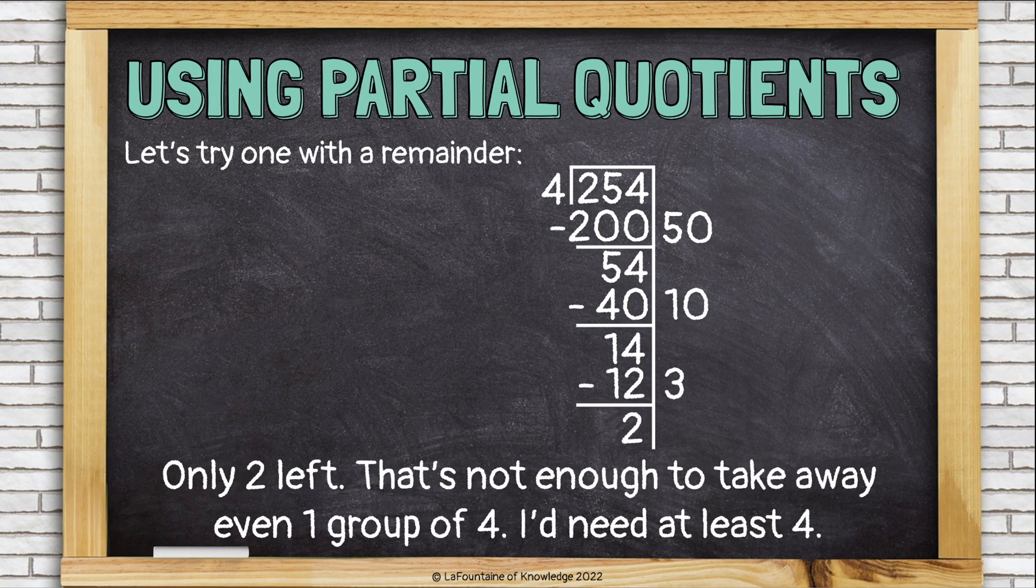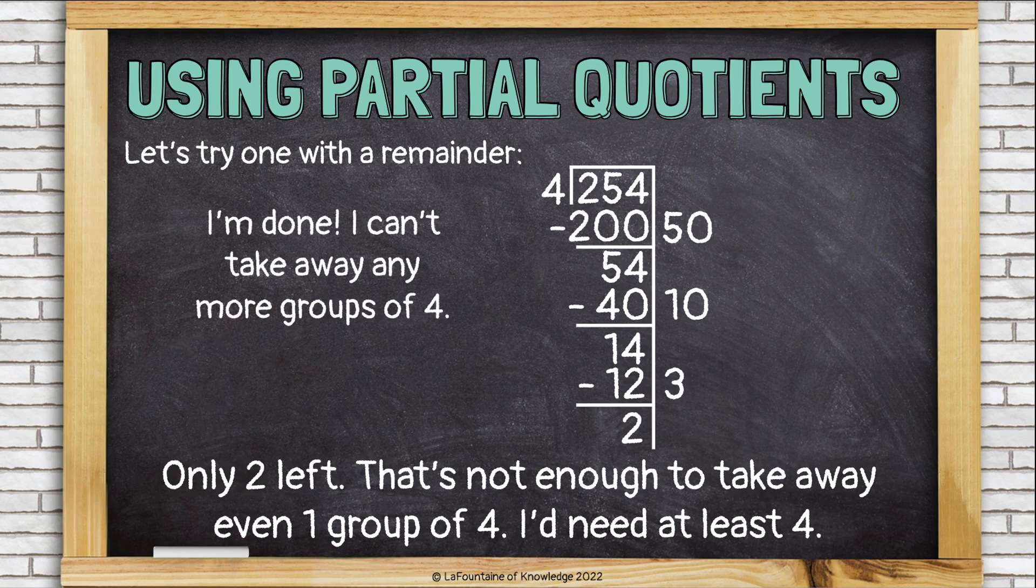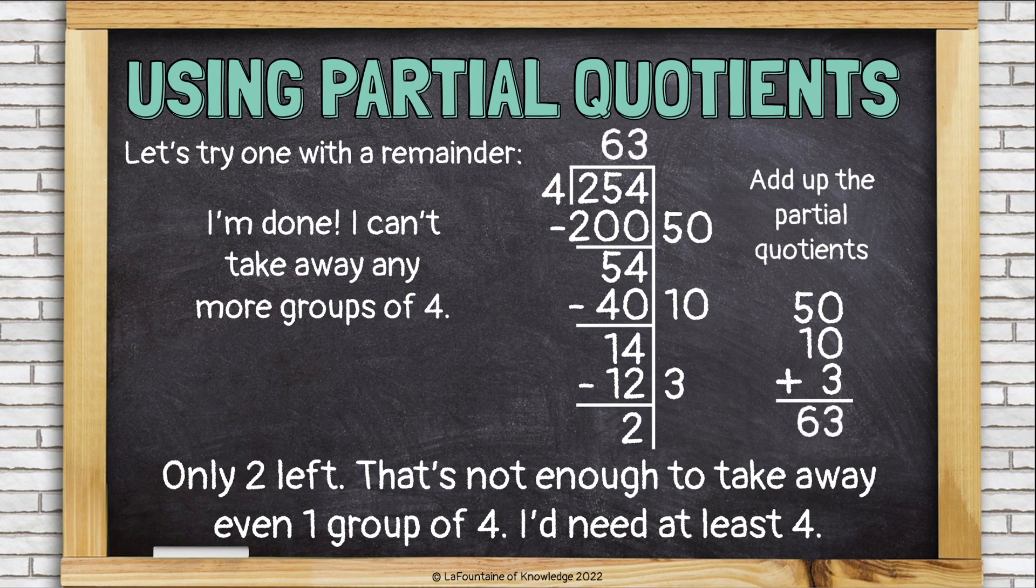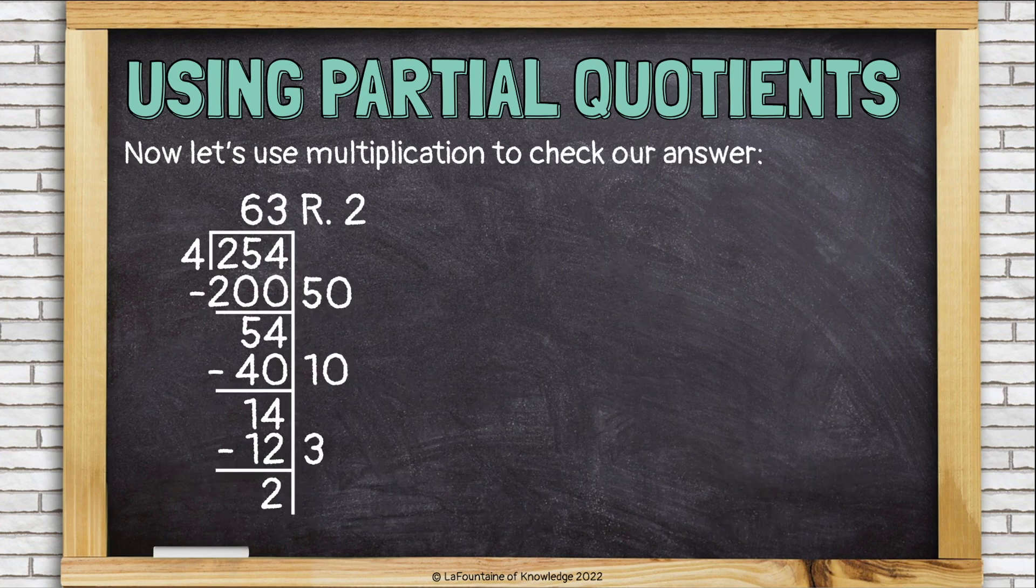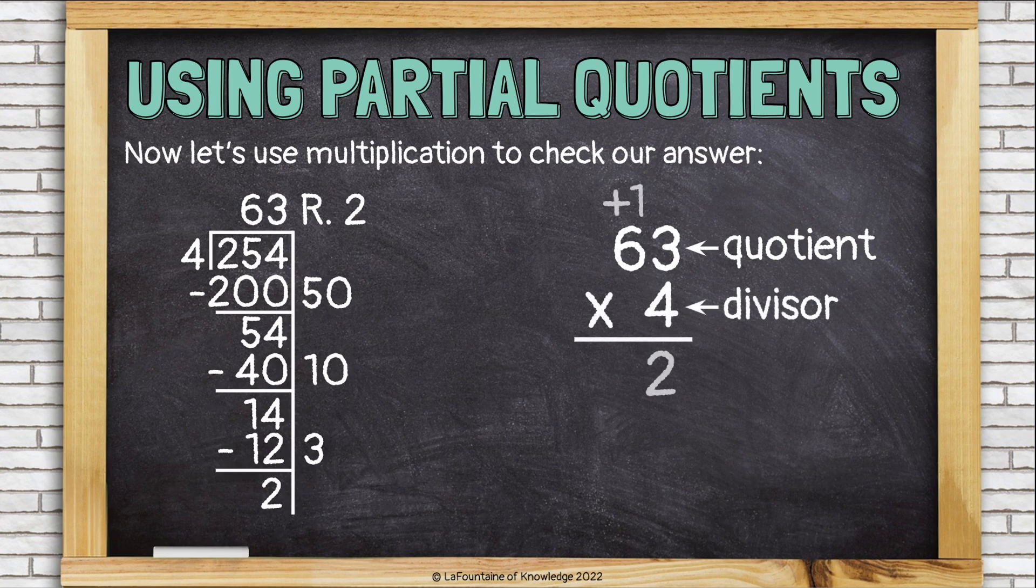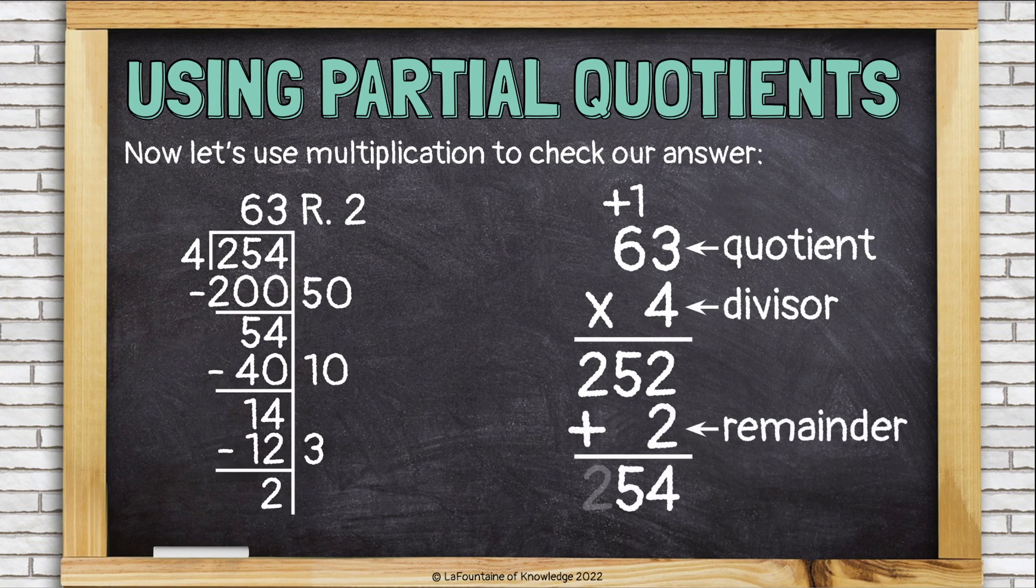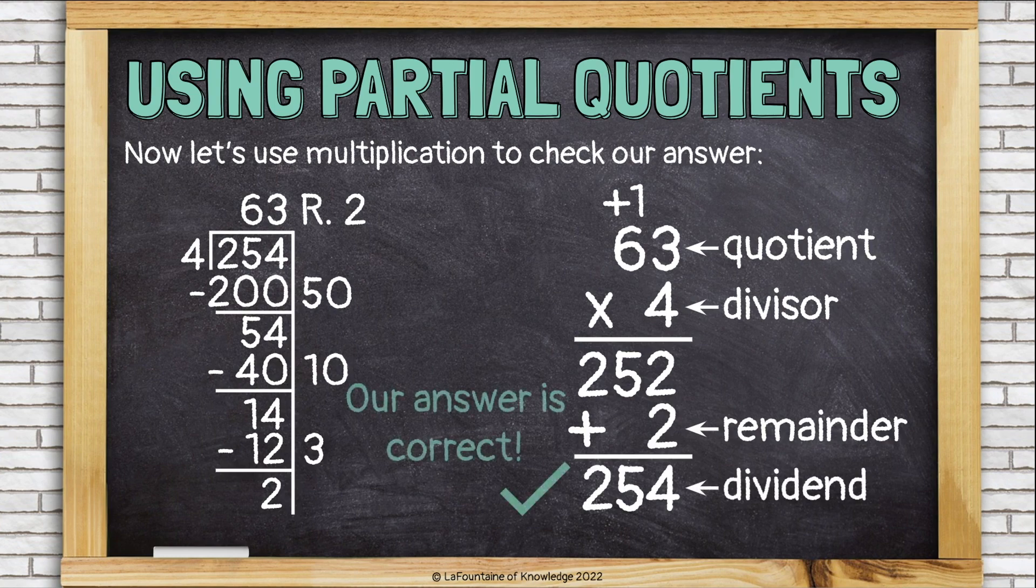Hmm, I only have 2 left. That's not enough to take away even one group of 4. I'd need at least 4 for that. So I'm done. I can't take away any more groups of 4, and I'm going to add up my partial quotients, 63, and that 2 at the bottom is my remainder. I can also check this one with multiplication the same way. Multiply the quotient by the divisor, and then don't forget you have to add the remainder to it. And if you get the dividend once you've finished adding the remainder, then you have the correct answer.